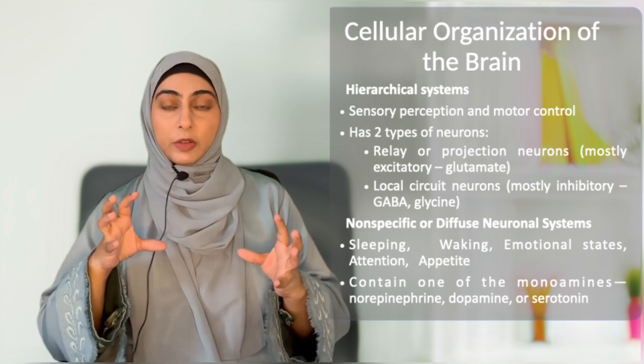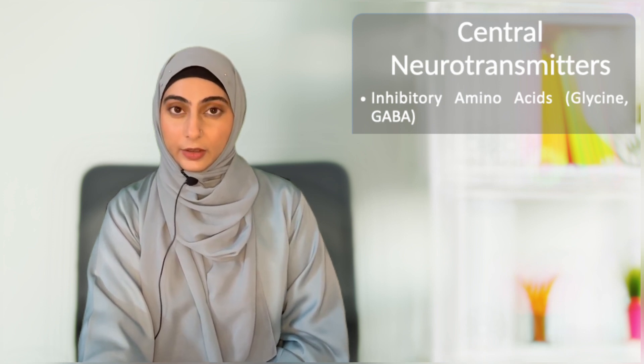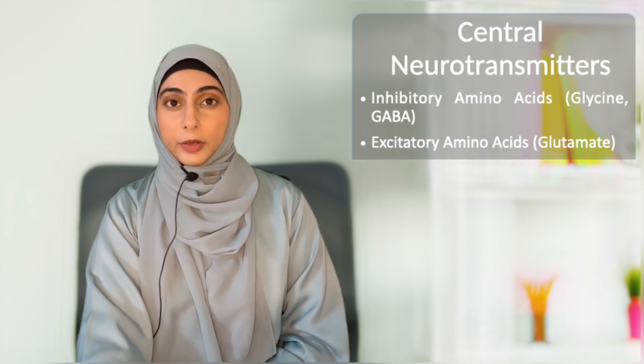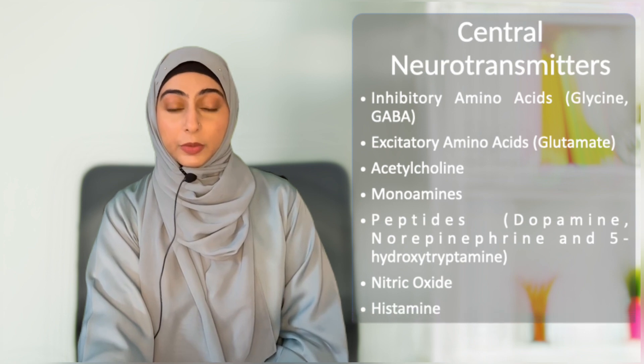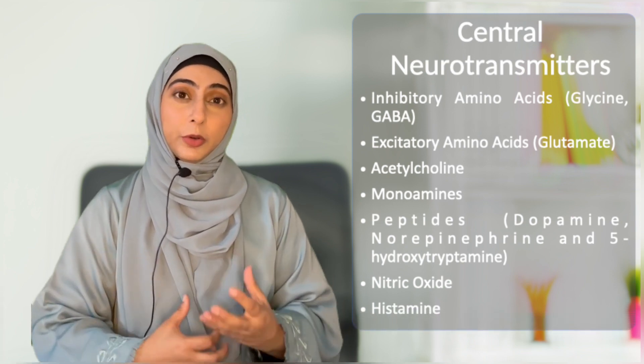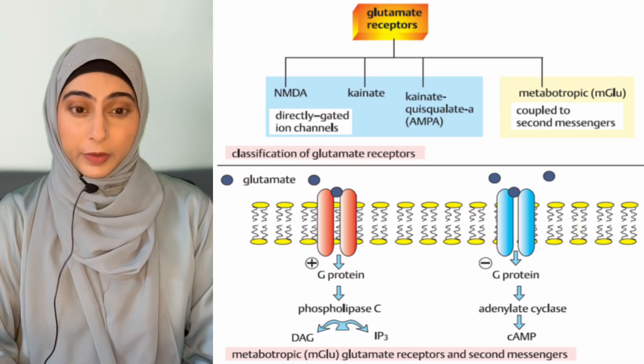Diffuse neuronal systems are different from hierarchical pathways. Within the brain's gray matter, there are multiple neuronal connections that are all interconnected and intertwined — diffuse networks where multiple transmissions occur at the same time with no hierarchy. This diffuse system controls multiple complex behaviors such as sleeping, wakefulness, behavior, appetite, and attention. A majority of neurotransmitters here are monoamines such as norepinephrine, dopamine, and serotonin. Other CNS neurotransmitters include inhibitory amino acids GABA and glycine, excitatory glutamate, acetylcholine, nitric oxide, and histamine.